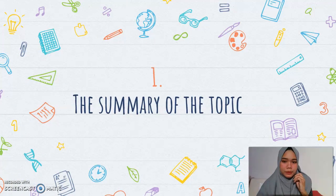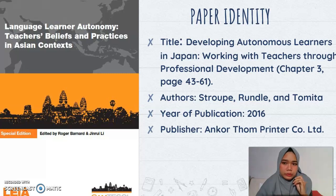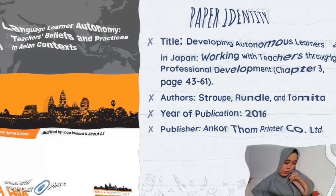The first point is the summary of the topic. As I mentioned before, the title of the paper is 'Developing Autonomous Learners in Japan: Working with Teachers Through Professional Development.' This paper is in the book entitled 'Language Learner Autonomy: Teachers' Beliefs and Practices in Asian Contexts,' edited by Barnard and Lee in 2016. This paper is chapter 3 of that book, pages 43 to 61, with the authors Stroop, Randall, and Tomita, published in 2016 by Encore Tom Printer Company Limited.